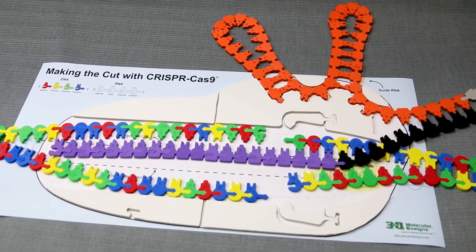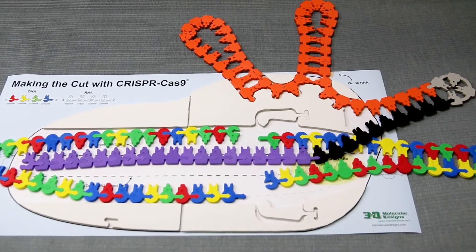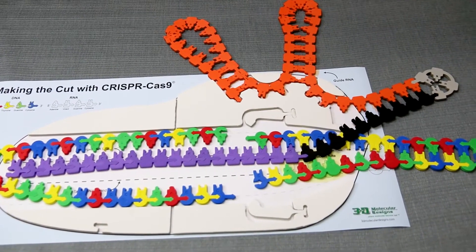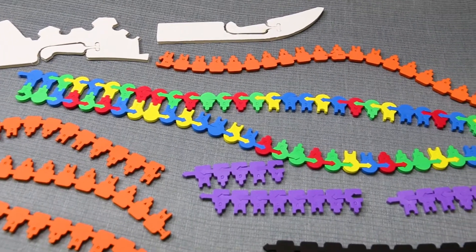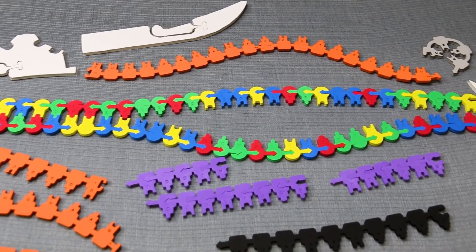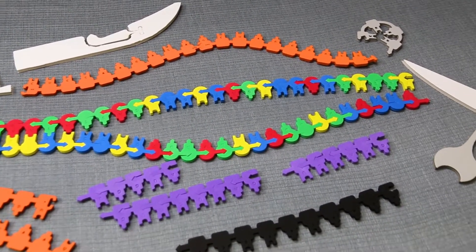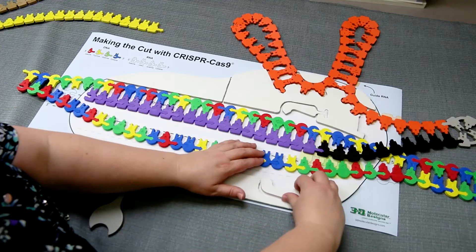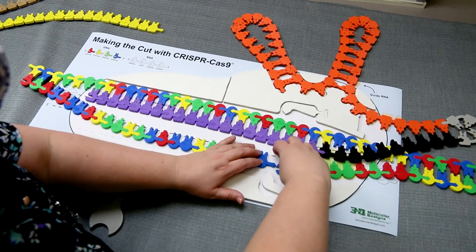With Making the Cut with CRISPR-Cas9, explore the structure of the CRISPR-Cas9 endonuclease, how it destroys viral genome and prevents the infection of bacteria, and how it is being used to edit the human genome.